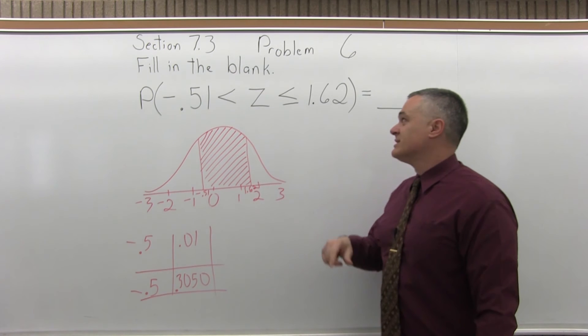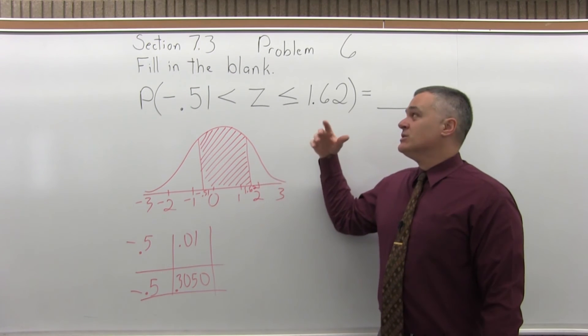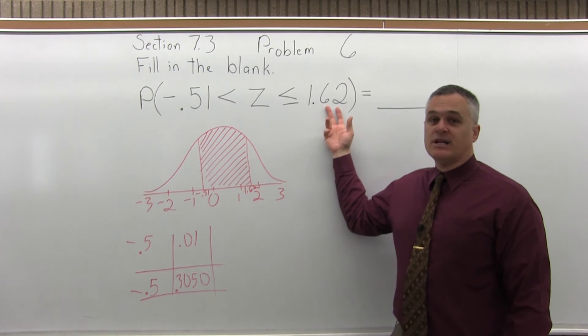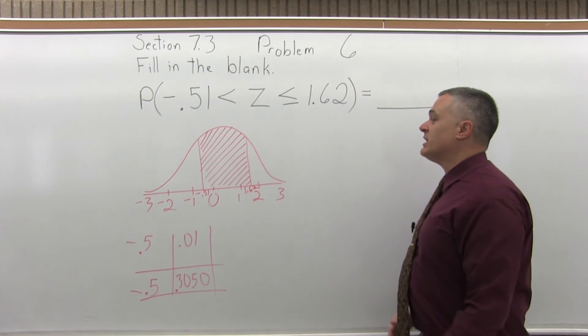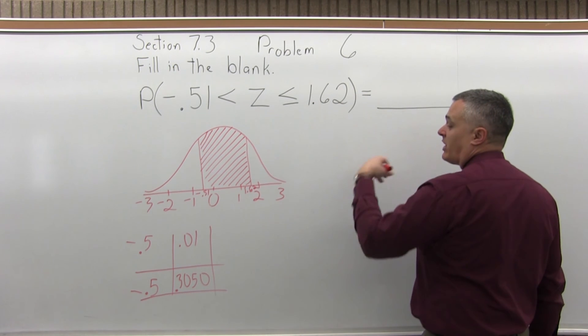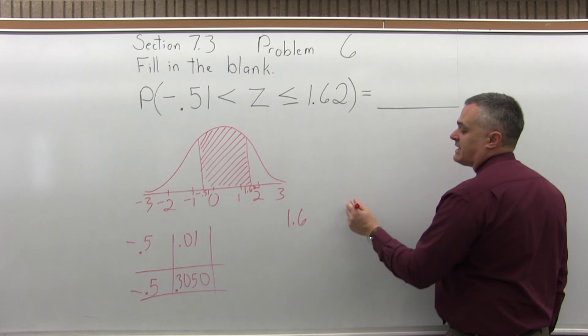Now we have to do the same process for a positive 1.62. So first we want to write it so that it has two places after the decimal, which we have. Next you want to split the number into two parts by pulling off the rightmost digit. So the 2 will come off to the side.